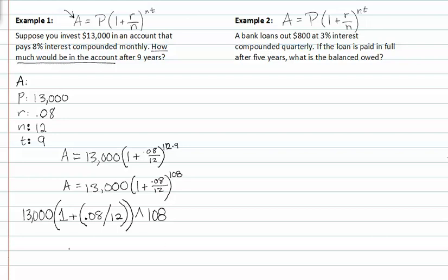This should give you A, and in this case A is equal to $26,643.89.